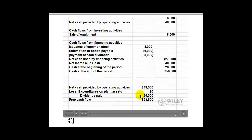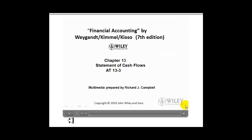Free cash flow is computed by subtracting expenditures on plant assets and dividends paid from net cash provided by operating activities. In this case, free cash flow is $23,500. There you go — there is your demonstration of preparing a statement of cash flows.